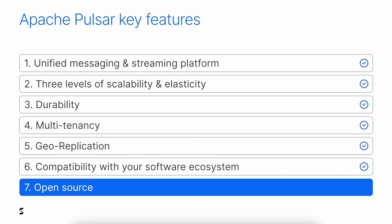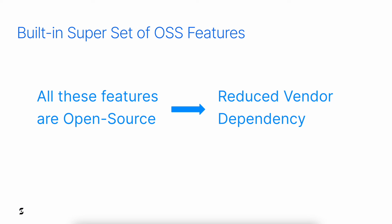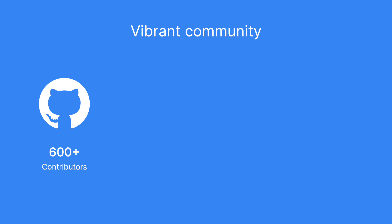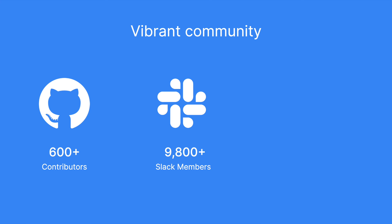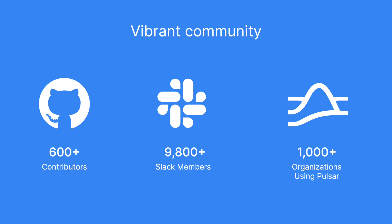Pulsar also has a great open source community. All the features I presented are available in open source — if you download Pulsar, you'll have all of them. This is great because you don't depend on a specific vendor. You're free to call a vendor to provide Pulsar as a service like StreamNative, or you can manage a Pulsar cluster by yourself. There is no vendor lock-in. There are more than 600 contributors to Pulsar, and the entire Pulsar codebase is growing year over year. The number of Slack members is about to reach 10,000, and there are thousands of organizations that are using Pulsar.